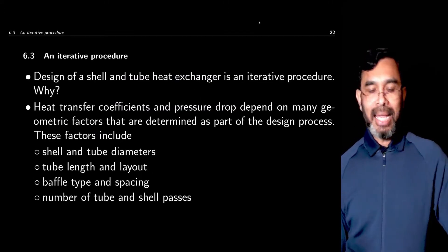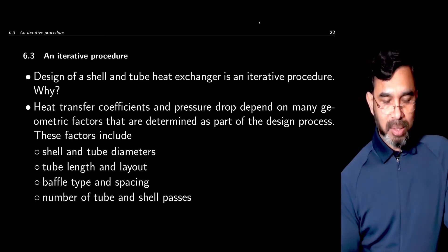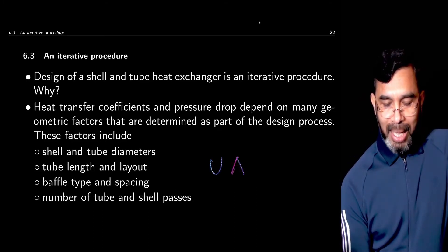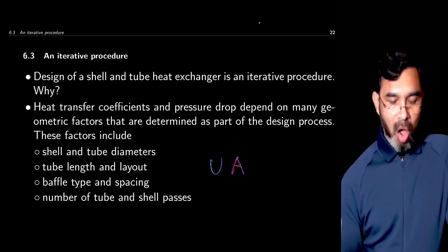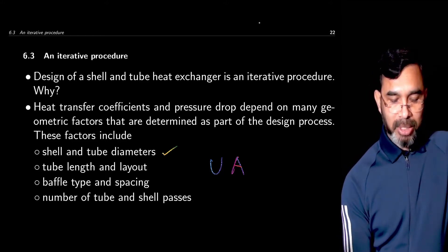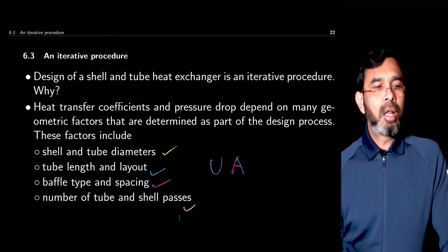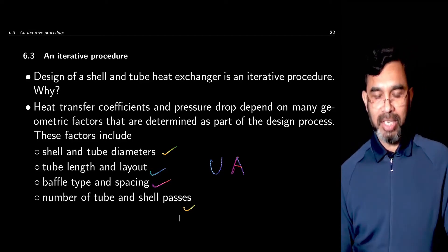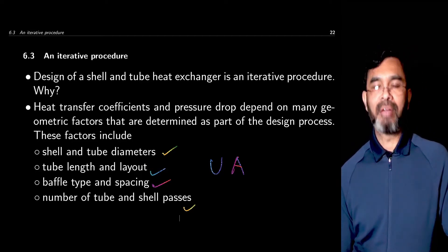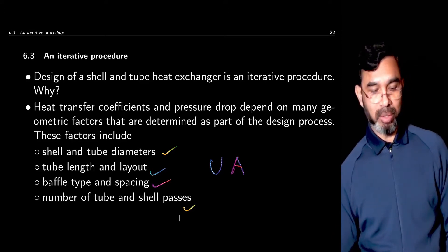The design of a heat exchanger becomes an iterative procedure because we have U and A — these two parameters — and both of them depend on the shell and tube diameter, their layout, length, baffle type, and the number of shell and tube passes. All of these design parameters affect the heat transfer area as well as the heat transfer coefficient by affecting the flow properties of the fluids. That's why it becomes an iterative procedure.